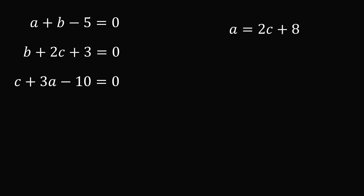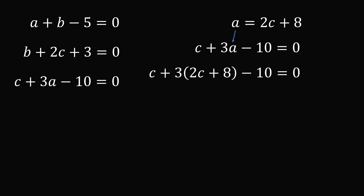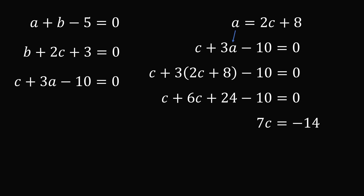From here, we could substitute into the third equation for a. So we have c plus 3 multiplied by the quantity 2c plus 8 minus 10 is equal to 0, which means c plus 6c plus 24 minus 10 is equal to 0, which means 7c is equal to negative 14, which means c is equal to negative 2.